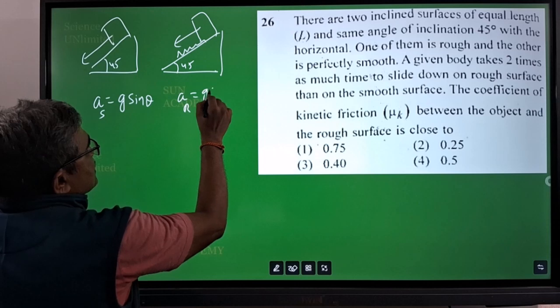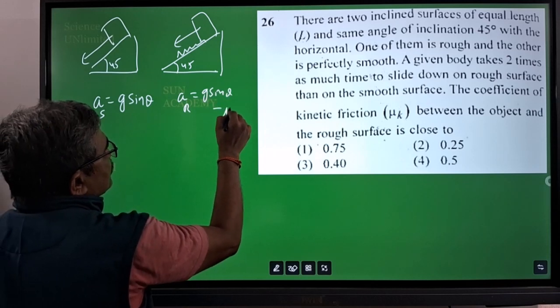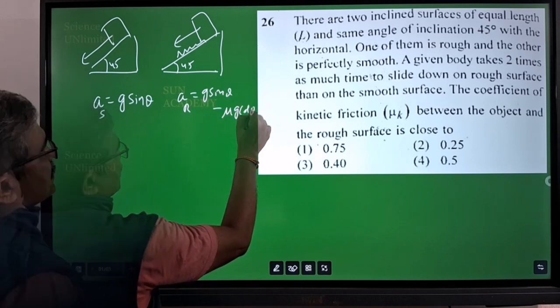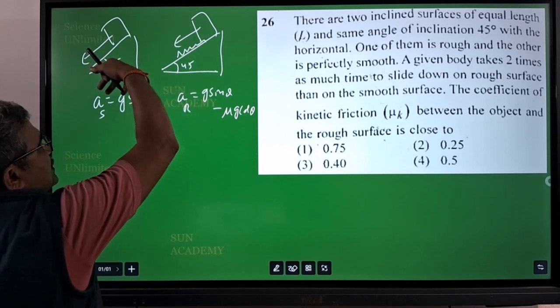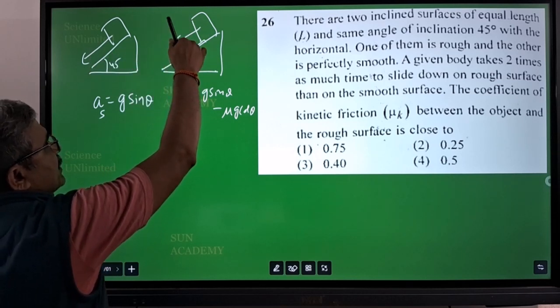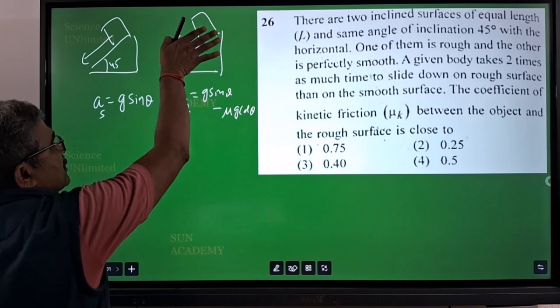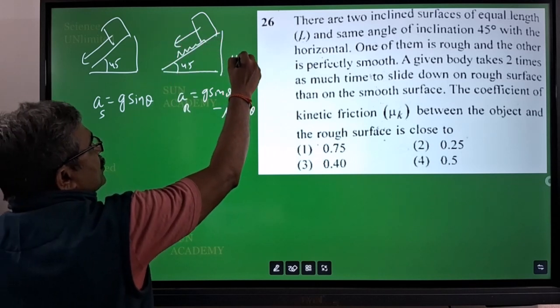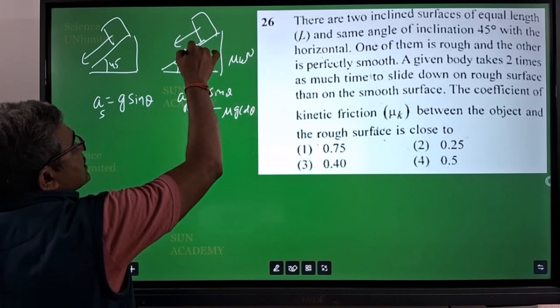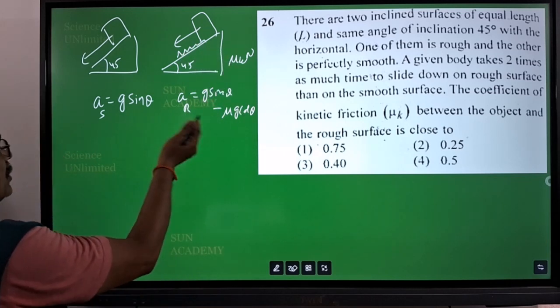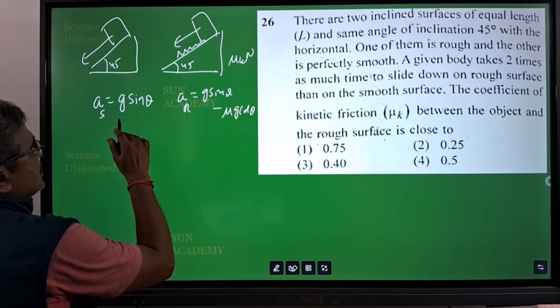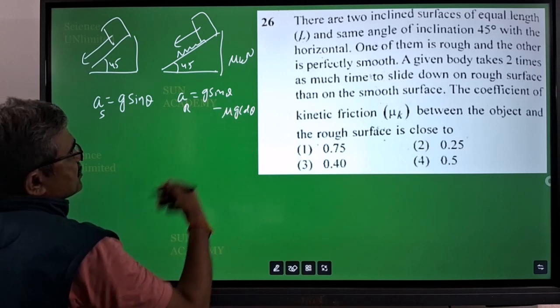ar is equal to g sin θ minus μ g cos θ. Because whatever the acceleration is there, earlier when the roughness is not there, it is g sin θ. When roughness is there, frictional force is opposing it, so frictional force is μk into normal force, where normal force is balanced by g cos θ. Here we got two accelerations: g sin θ and g sin θ minus μ g cos θ.